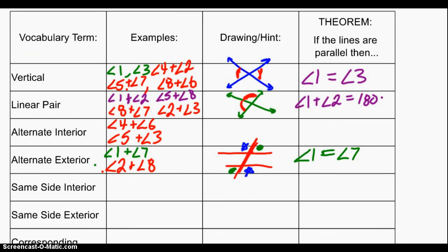Let's write those down: alternate interior angles are four and six together, and five and three together. They're interior and they're alternate. Just like alternate exterior angles, alternate interior angles are congruent. So something like angle four would equal angle six — those two angles are congruent, they're the same size.